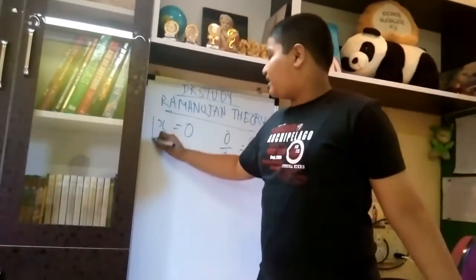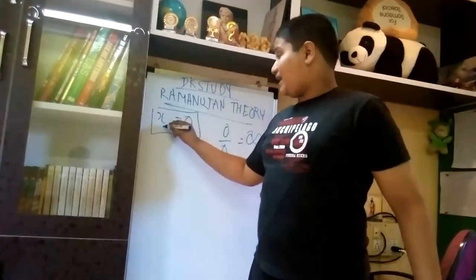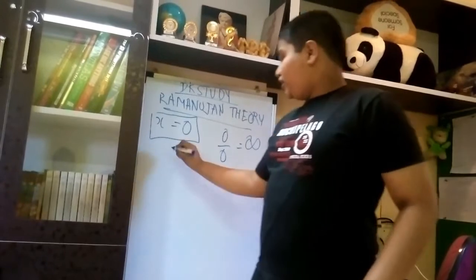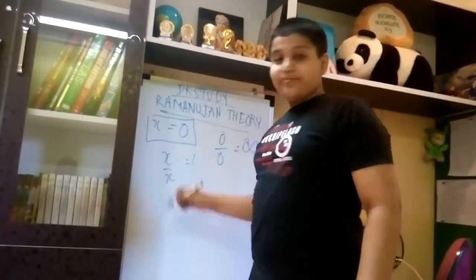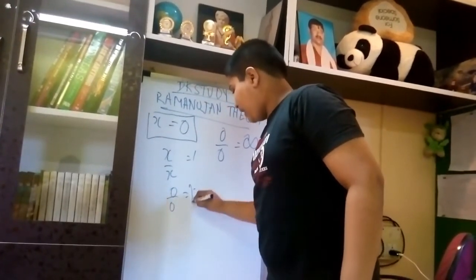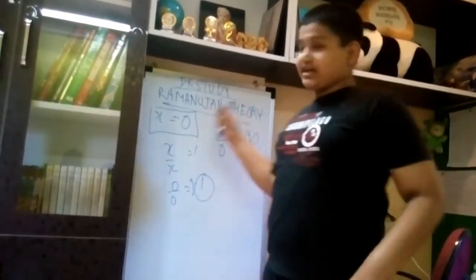As I said earlier, any variable can have any constant value. So, if you take X constant value as 0, everyone must be knowing that X upon X is 1. But, what if 0 upon 0 can be 1? This is the Ramanujan theory.